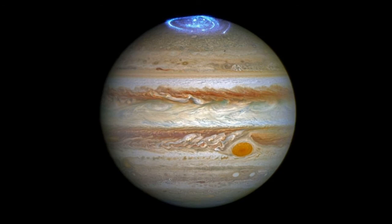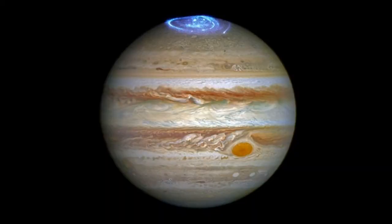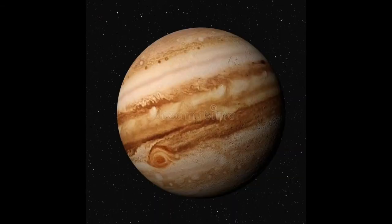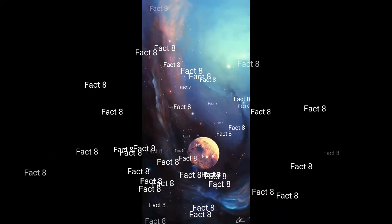Fact seven: the Sun is an average star. There are many other stars which are hotter and cooler than the Sun. However, the Sun looks brighter and bigger than other stars from Earth because it is the closest star to us.